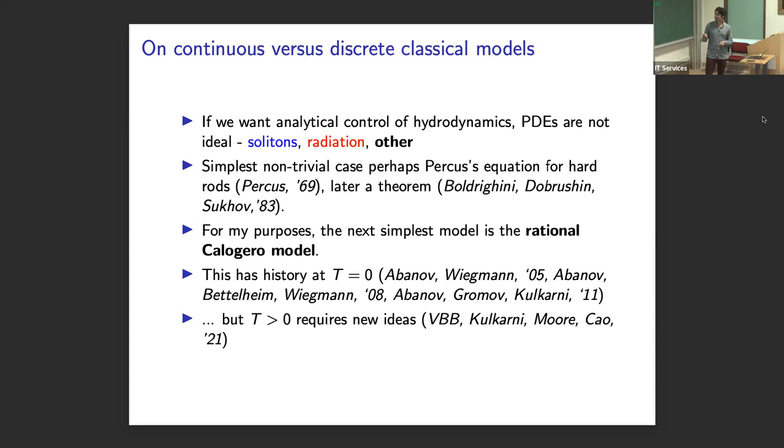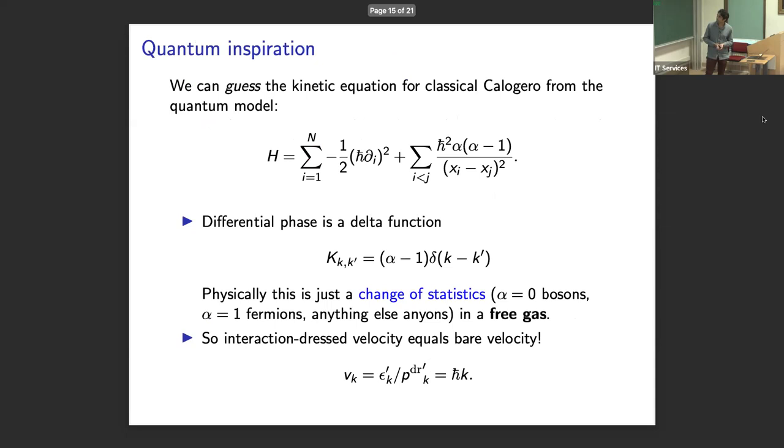So the simple non-trivial case is probably this equation for hard rods that we heard about just now, I think was first written down by Percus, who actually also had this contraction map in his paper, later elevated to a theorem. So for my purposes, the next simplest model is actually the rational Calogero model. And people were studying this model for completely different reasons in the early 2000s. Basically, you can show that its zero temperature, large scale dynamics is connected to the Benjamin Ono equation.